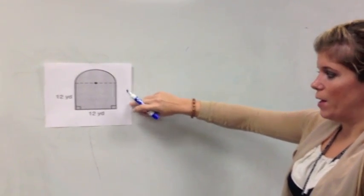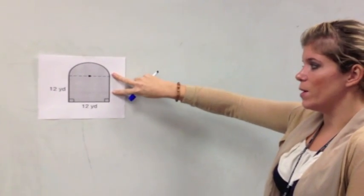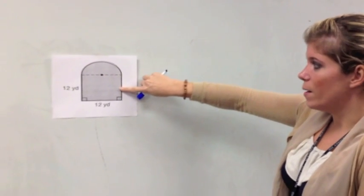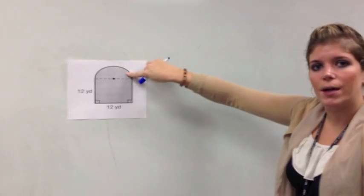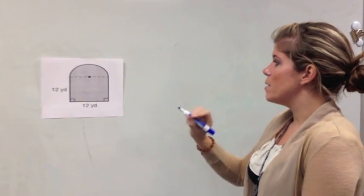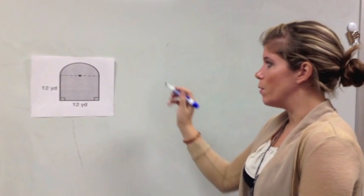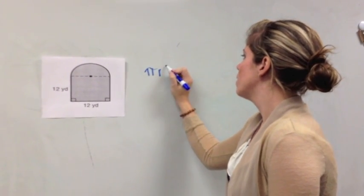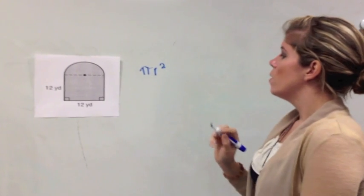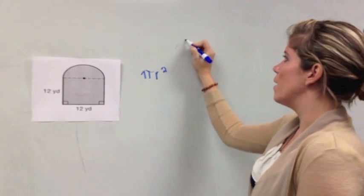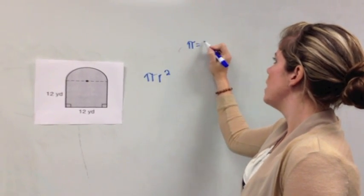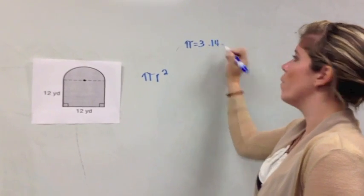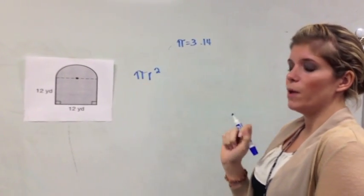Here is another composite figure, and my two shapes in this figure are a square, and I have a half circle here. So let's start with the half circle. We know for a full circle that our formula for area is pi r squared. First, we need to remember that pi here is going to equal 3.14. So we'll plug that in whenever it comes time.